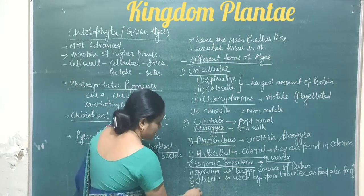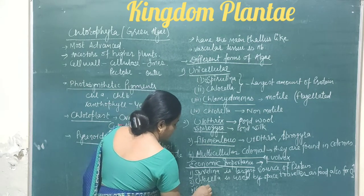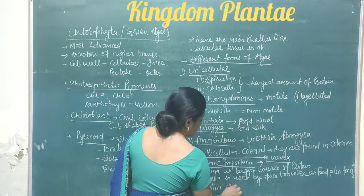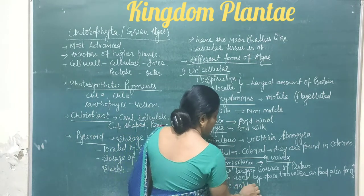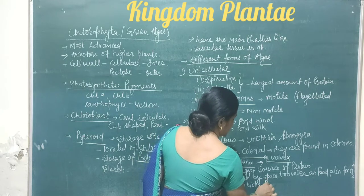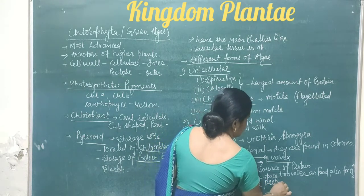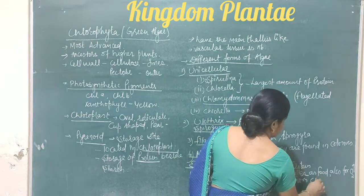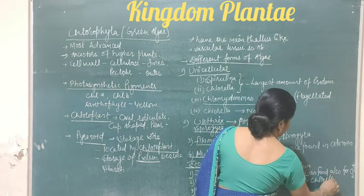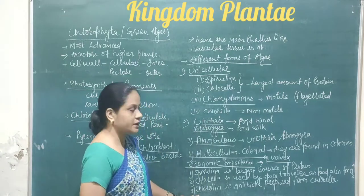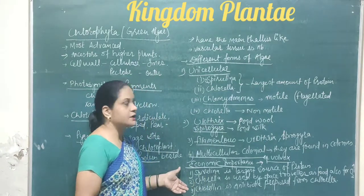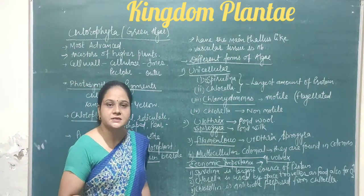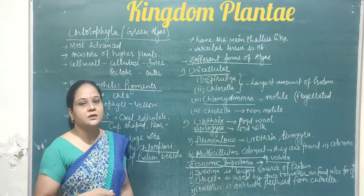Third, chlorellin is an antibiotic prepared from the alga Chlorella. So these are some of the economic importances of green algae. In the next session, we will discuss about the brown algae.